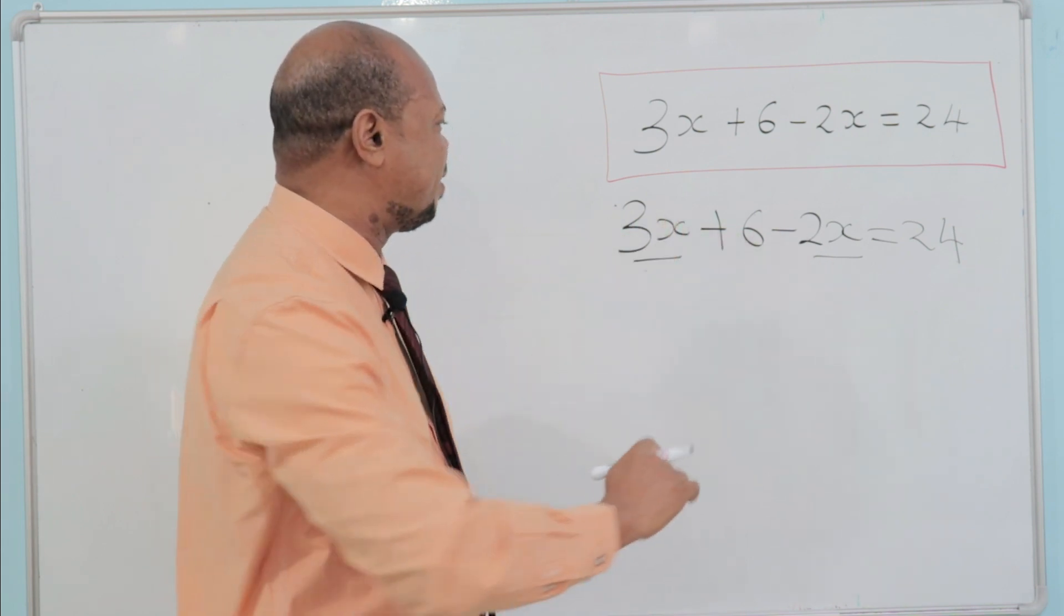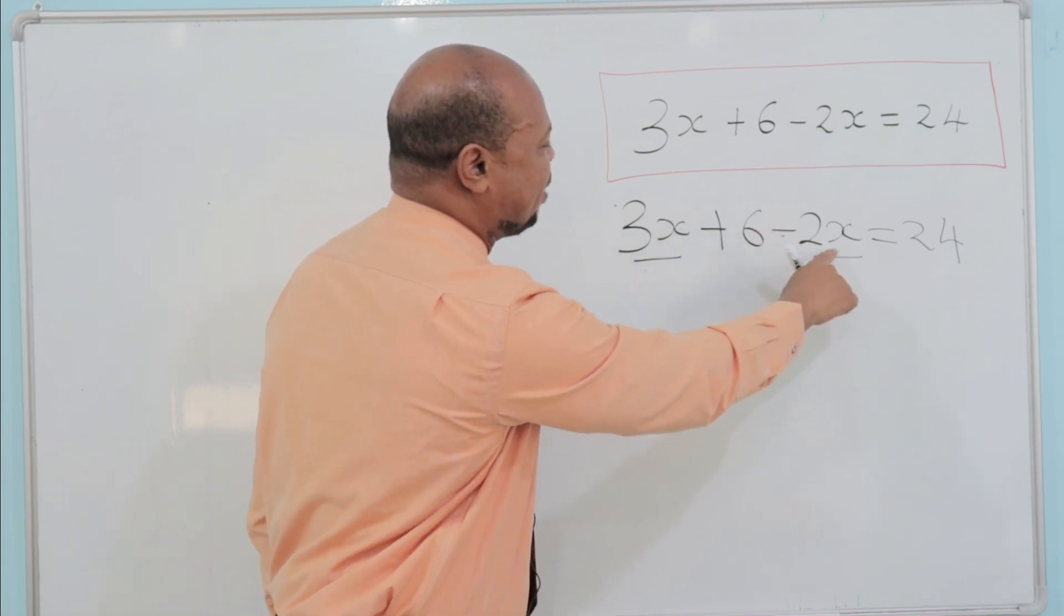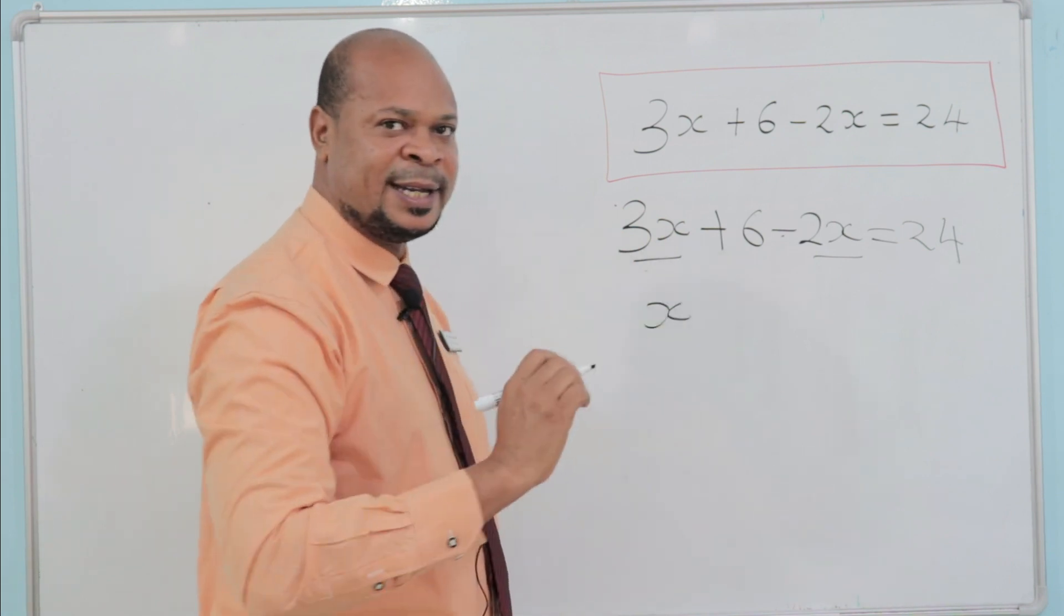To put them together, this 3x and this is minus 2x. When you put them together, you are going to have x only.